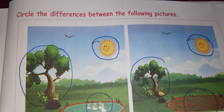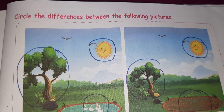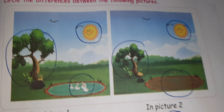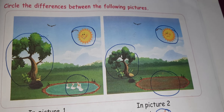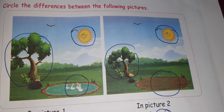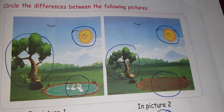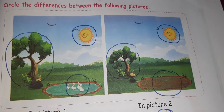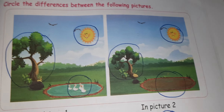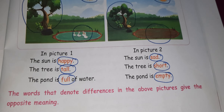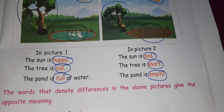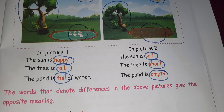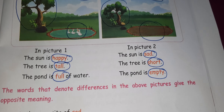Page number 103: circle the differences between the following pictures. The sun is smiling in one picture but not in the other. The tree looks very big and long, and there are ducks in one picture but no ducks in the other. So: the sun is happy vs. sad, the tree is tall vs. short, the pond is full of water vs. empty.